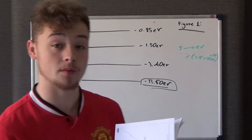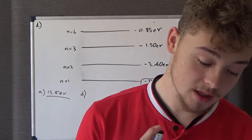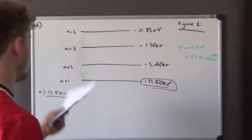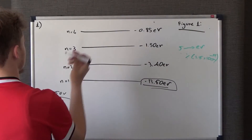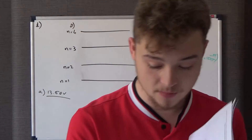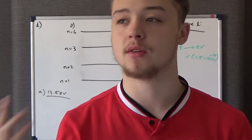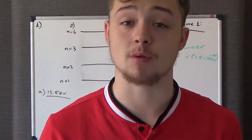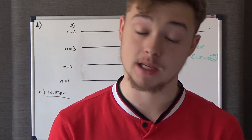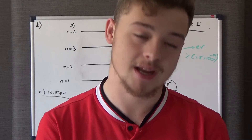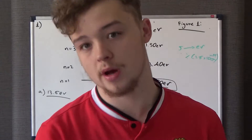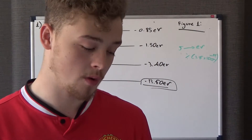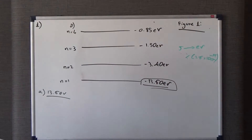Part b says: when an electron of 12.1 eV collides with the atom, photons of three different energies are emitted — show this on Figure 1. An electron with energy 12.1 eV can transfer all its kinetic energy to the atom. You might think we need 13.6 eV to ionize the atom, but the question specifies three different photons are emitted.